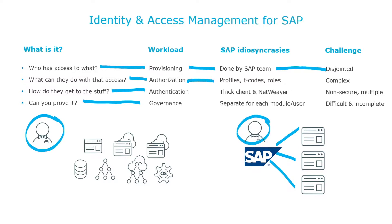For authorization, SAP uses things called profiles, T codes, and roles, whereas the rest of the enterprise uses things like groups. It also has roles, but they're not a one-to-one correlation with your SAP roles and especially with your T codes. So you've got a complex authorization environment. For authentication, SAP has a couple of options — there are thick client options as well as the NetWeaver thin client options — and some of those are non-secure. You may end up with multiple authentication scenarios across SAP and especially SAP combined with everything else.